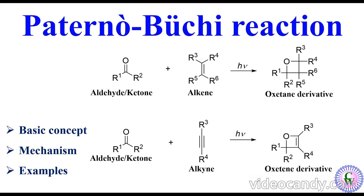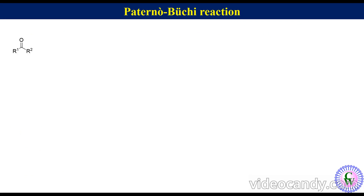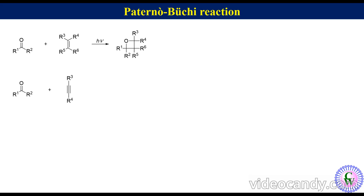Hello and welcome to my YouTube channel Chemviz. In this video we are going to learn the Paternò-Bùchi reaction. It is a non-concerted reaction between an aldehyde or ketone and an alkene under photochemical conditions to produce an oxetane derivative, or between an aldehyde or ketone and an alkyne under photochemical conditions to produce an oxetane derivative.